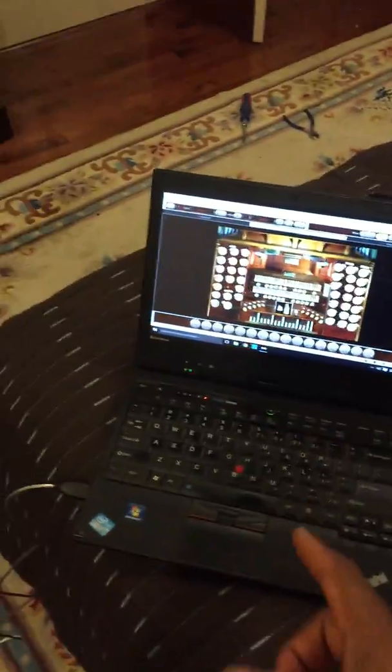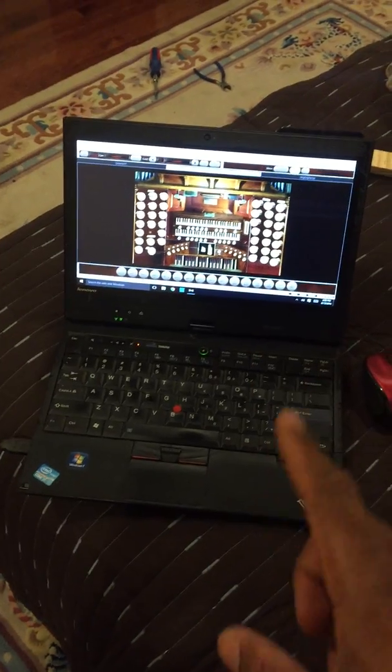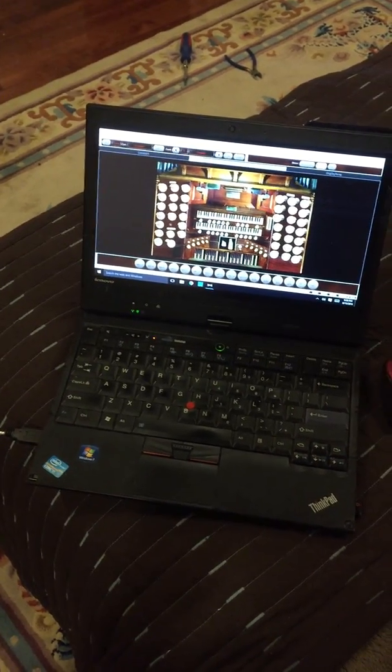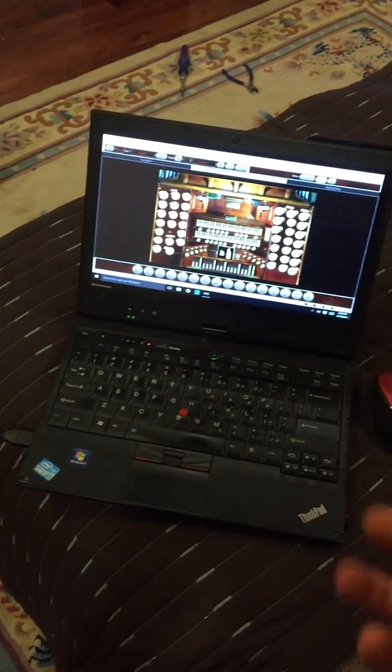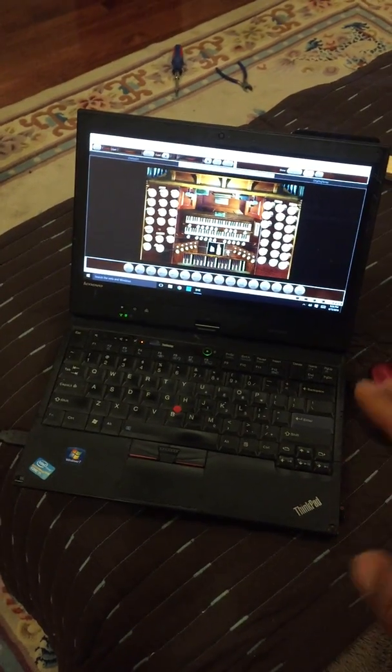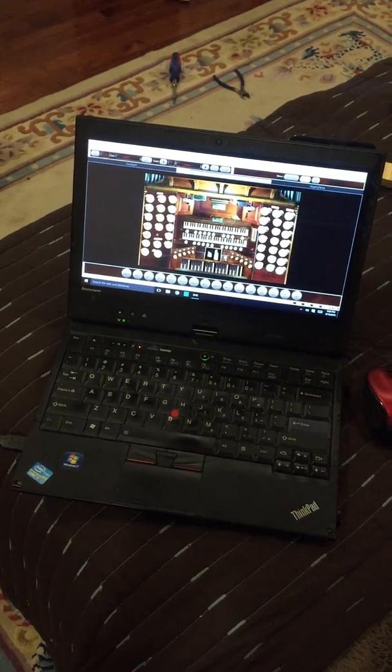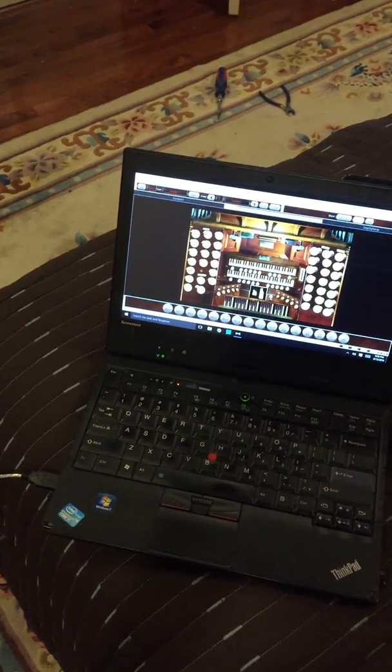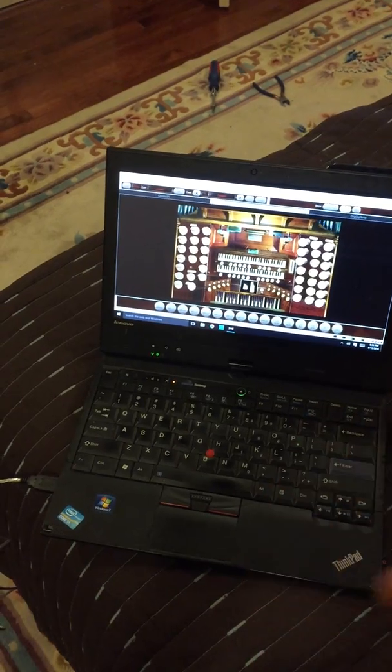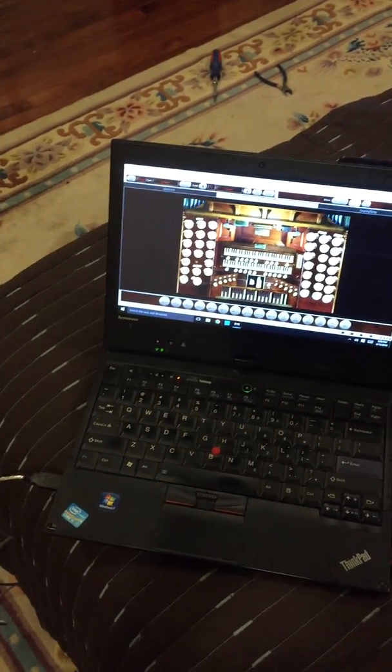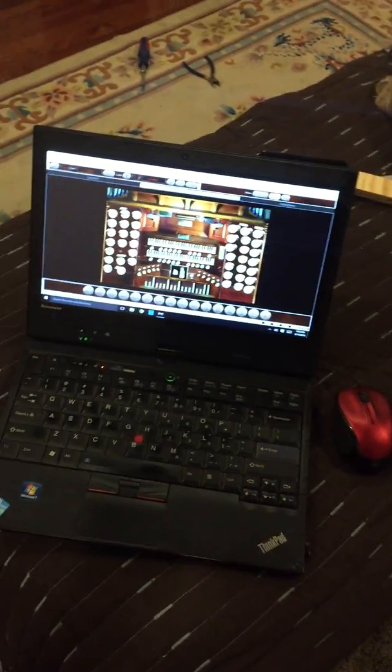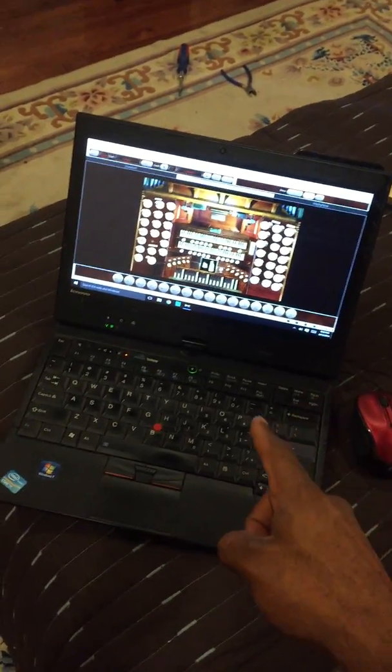When you get all this set up, the next thing that you want to do is go to the Hauptwerk website and download the software program for your computer. Once you've downloaded it, it's pretty self-explanatory. There's four different configurations, which basically means you can configure the software four different ways. You just have to open it that one time and you can access that particular configuration.